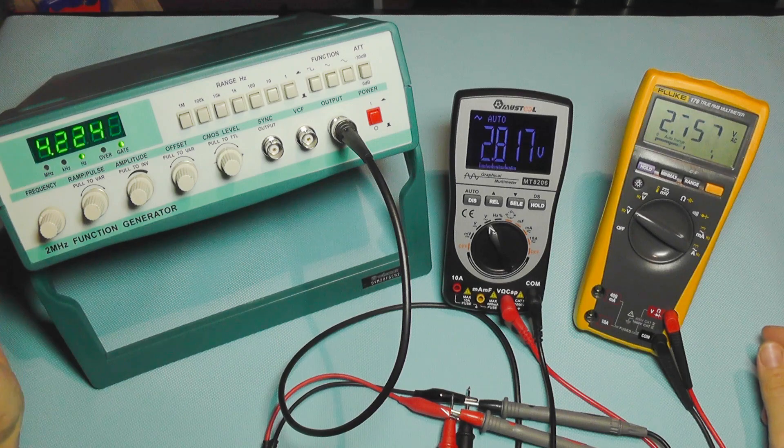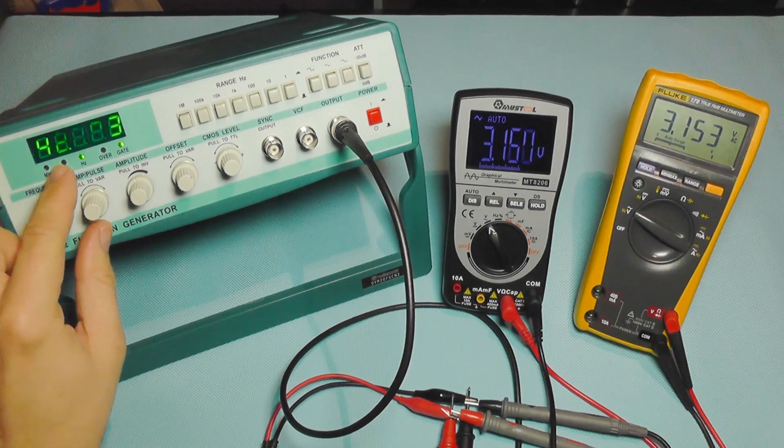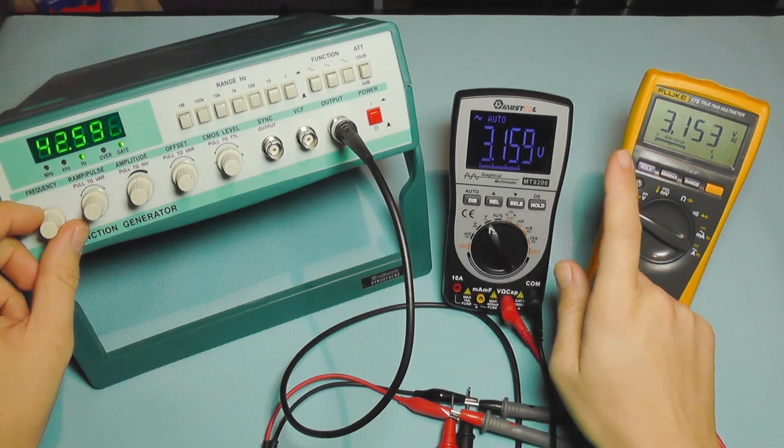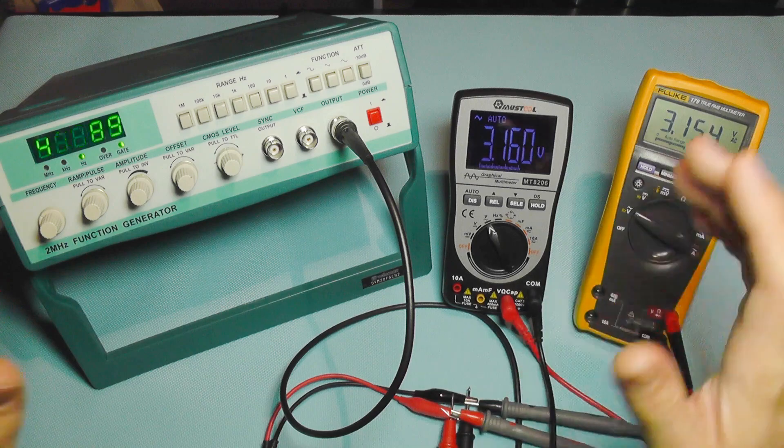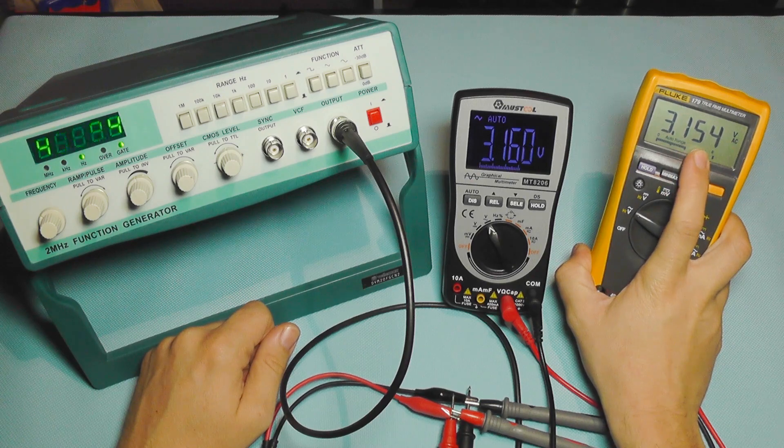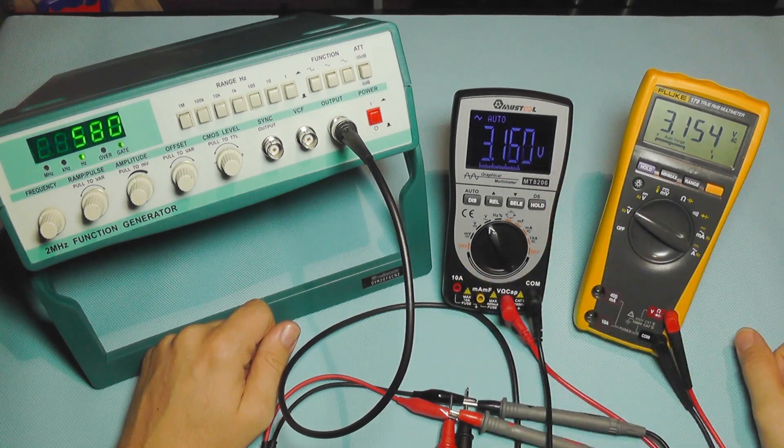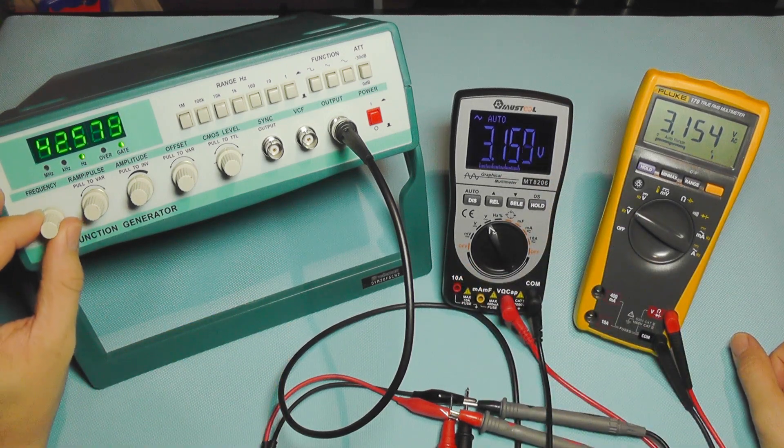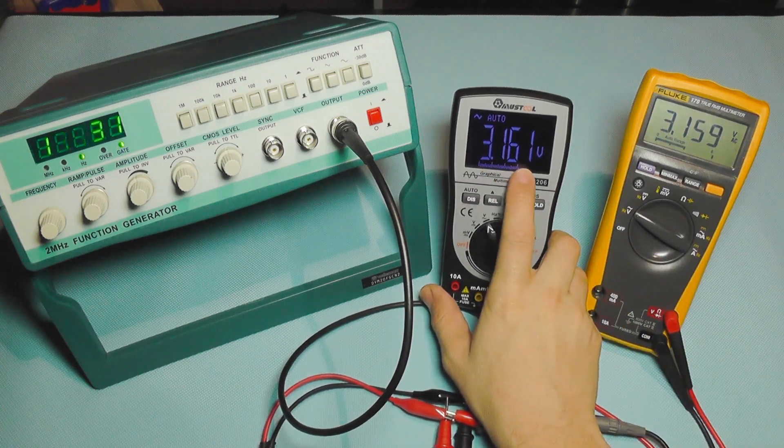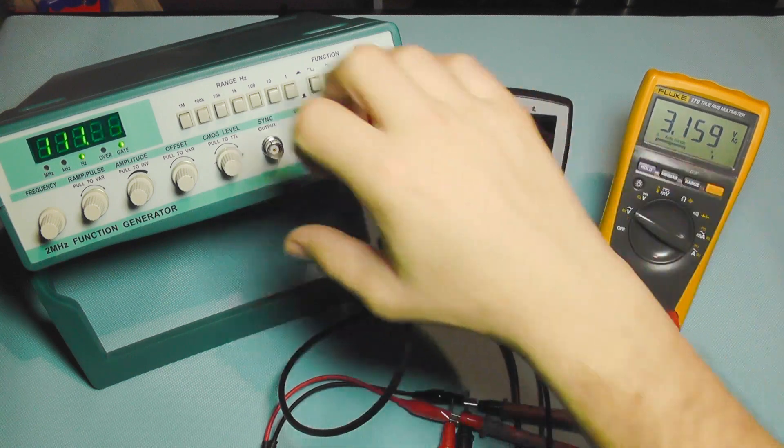I'm now going to up the frequency. I'm going to 100 Hertz. Now I actually have 42 Hertz here, and both meters are now stable and showing the voltage. Now I'm going to compare the voltage. This true RMS shows 3.154 and this is 3.15916, so they are rather close.